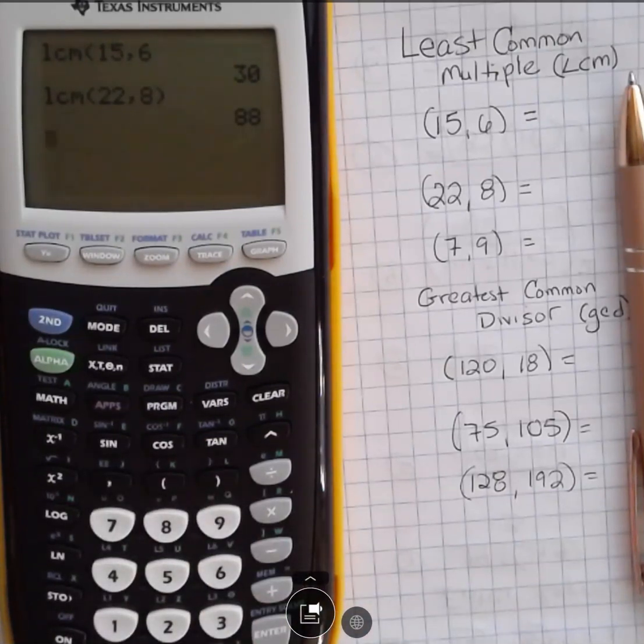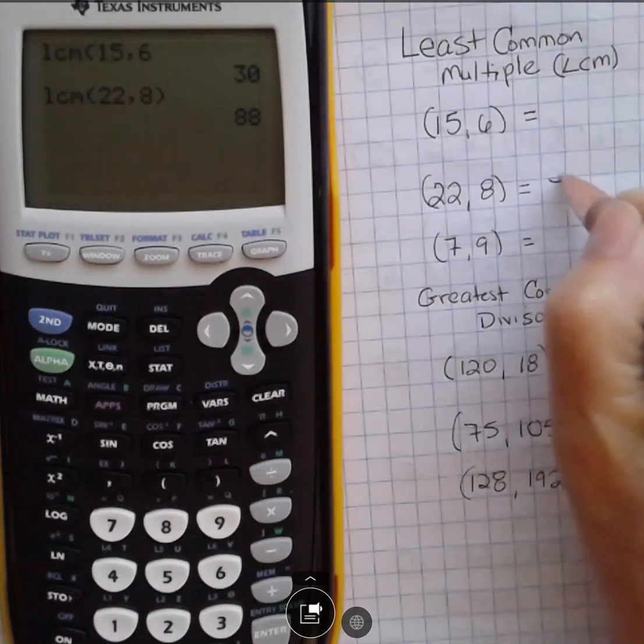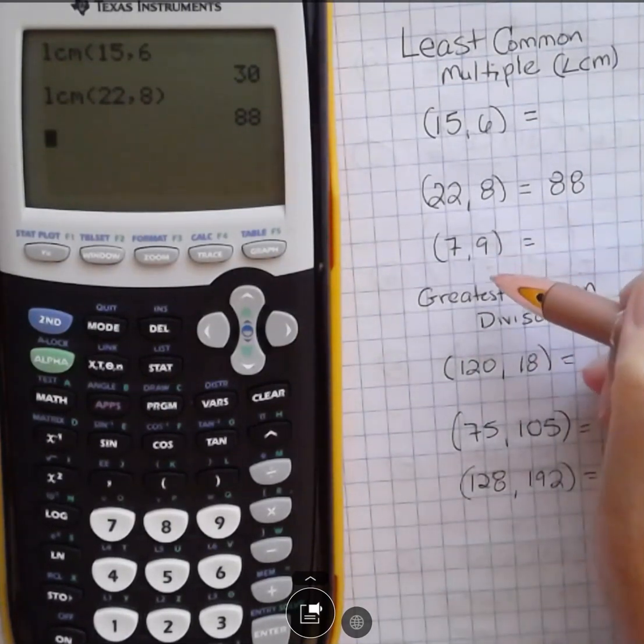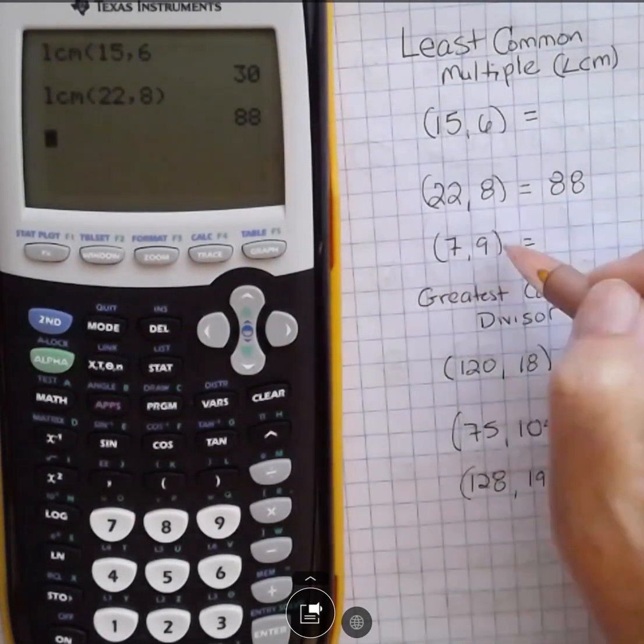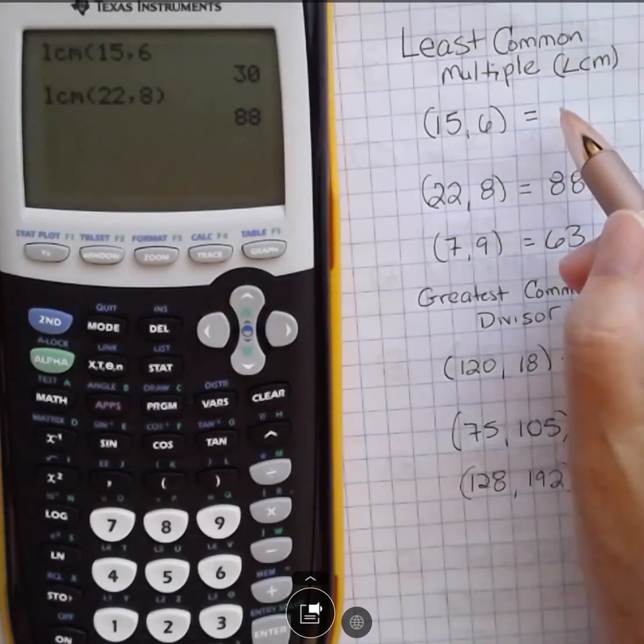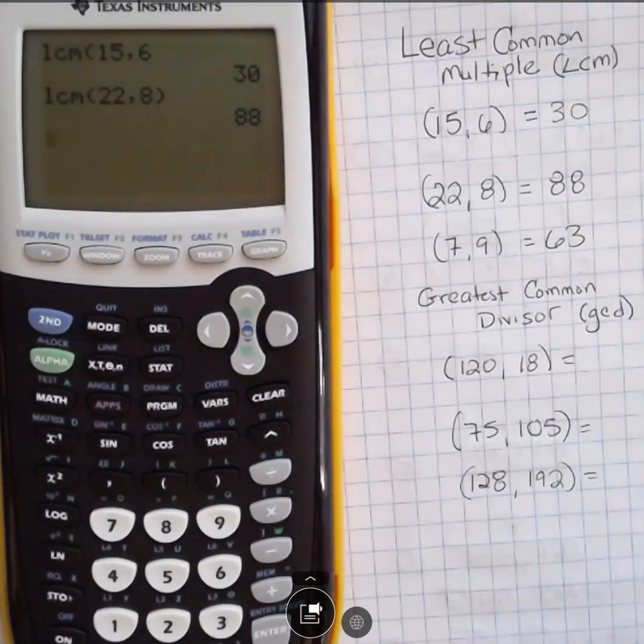The first number they both go into is 88. And you can see here for 7 and 9, when you have two numbers that neither one of them have any factors in common, to get that, you're just going to multiply those two together and get 63. But if you didn't know that, then you could put that in your calculator to get it.